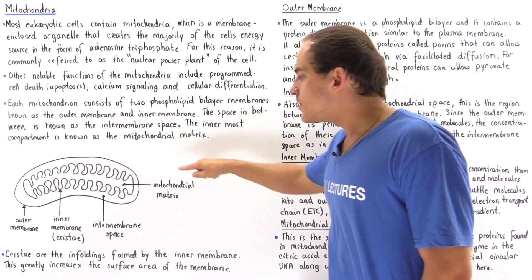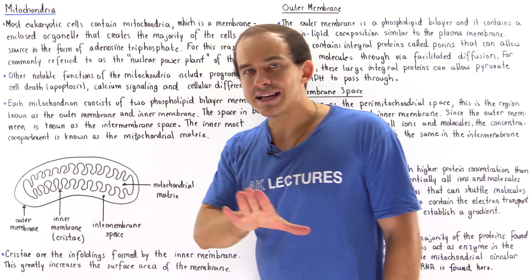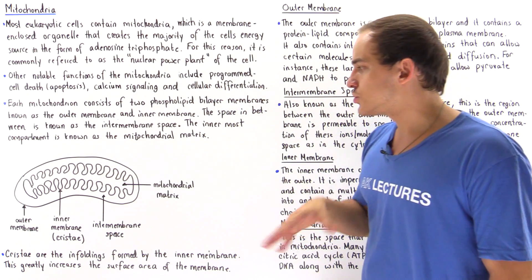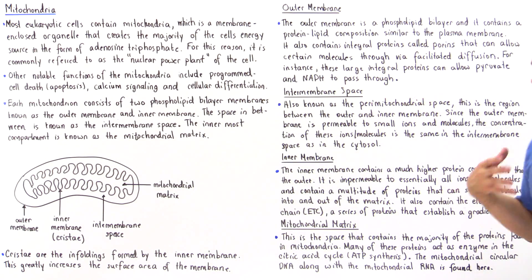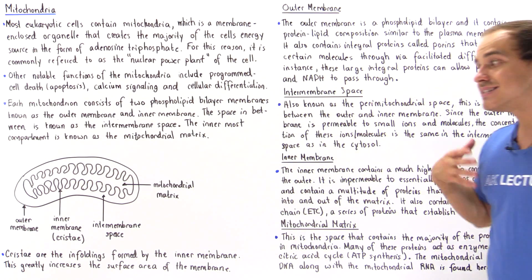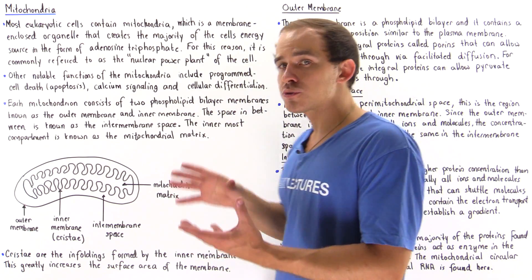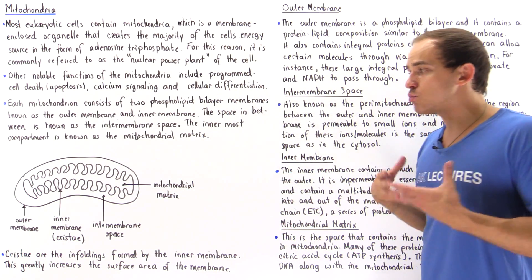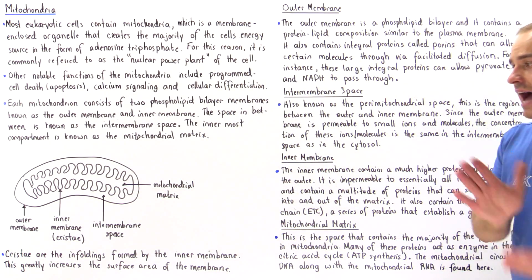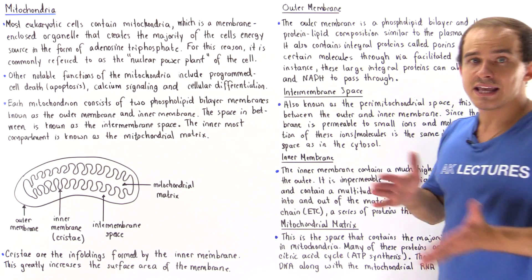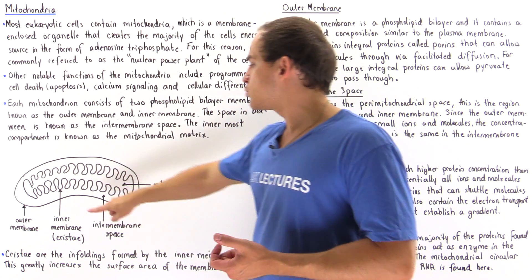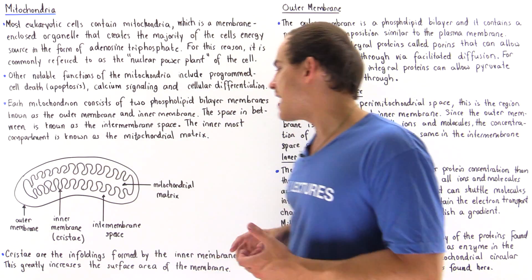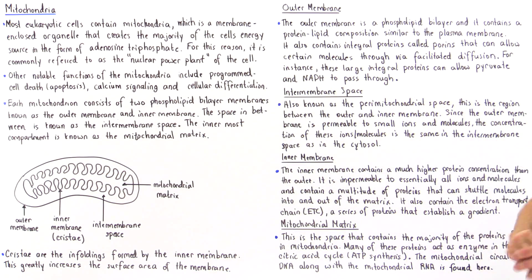Although the outer membrane is permeable to small molecules and ions, it is not permeable to large proteins. Therefore, the types of proteins found in the cytosol differ from those found in the intermembrane space.